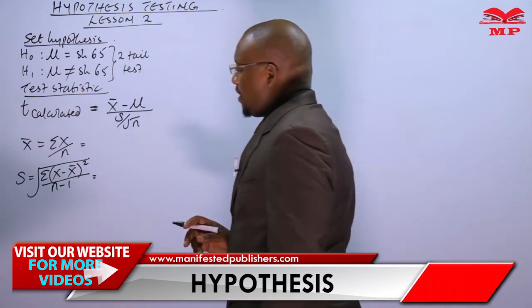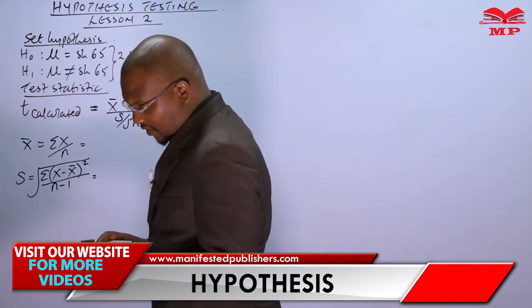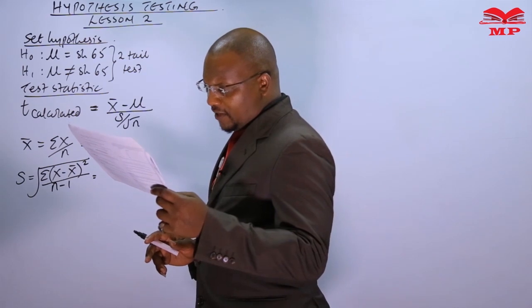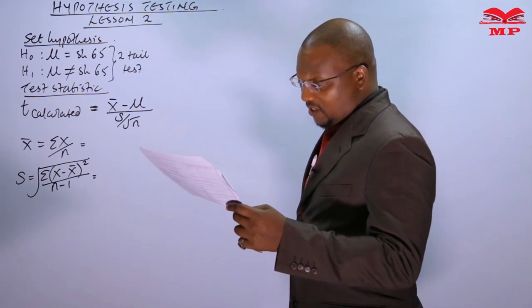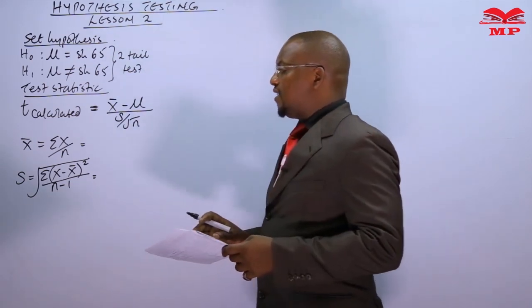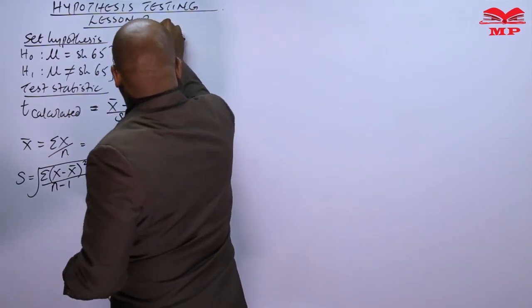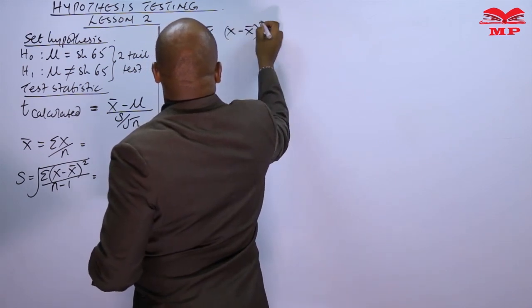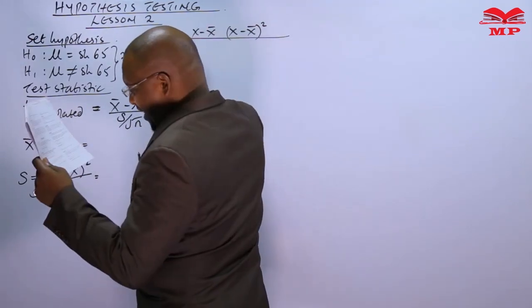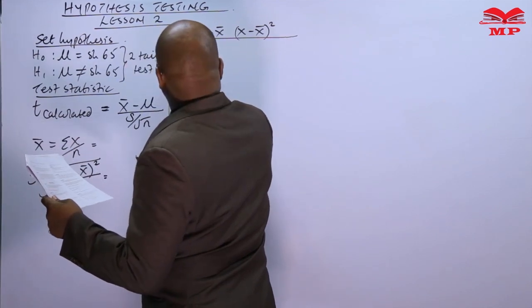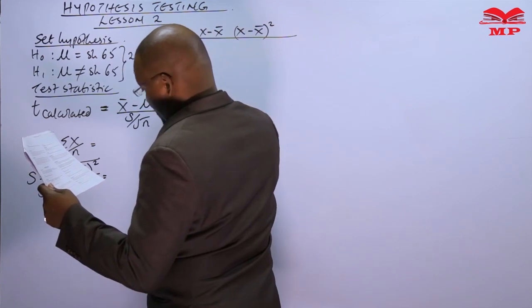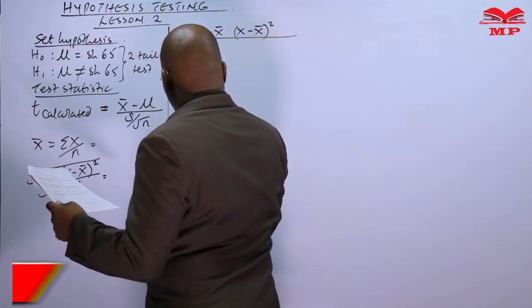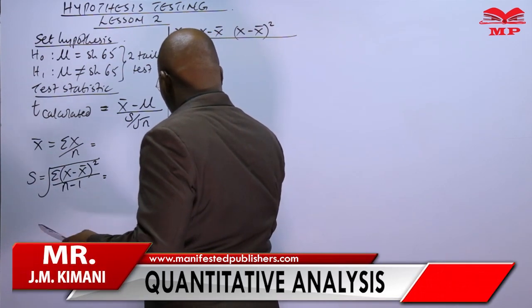We now use the given values. There are 10 prices to work with. We set up a table with columns for x, x minus x-bar, and (x minus x-bar) squared. The prices are: 66, 65, 69, 70, 69, 71, 70, 63, 64, and 68.